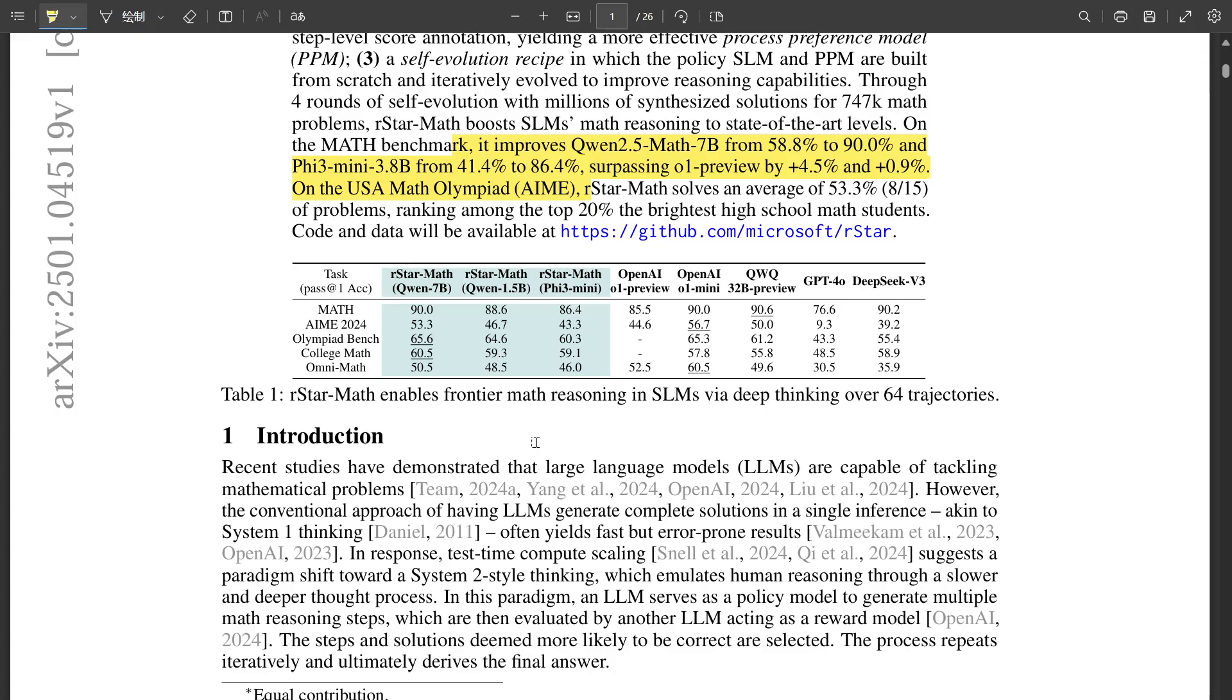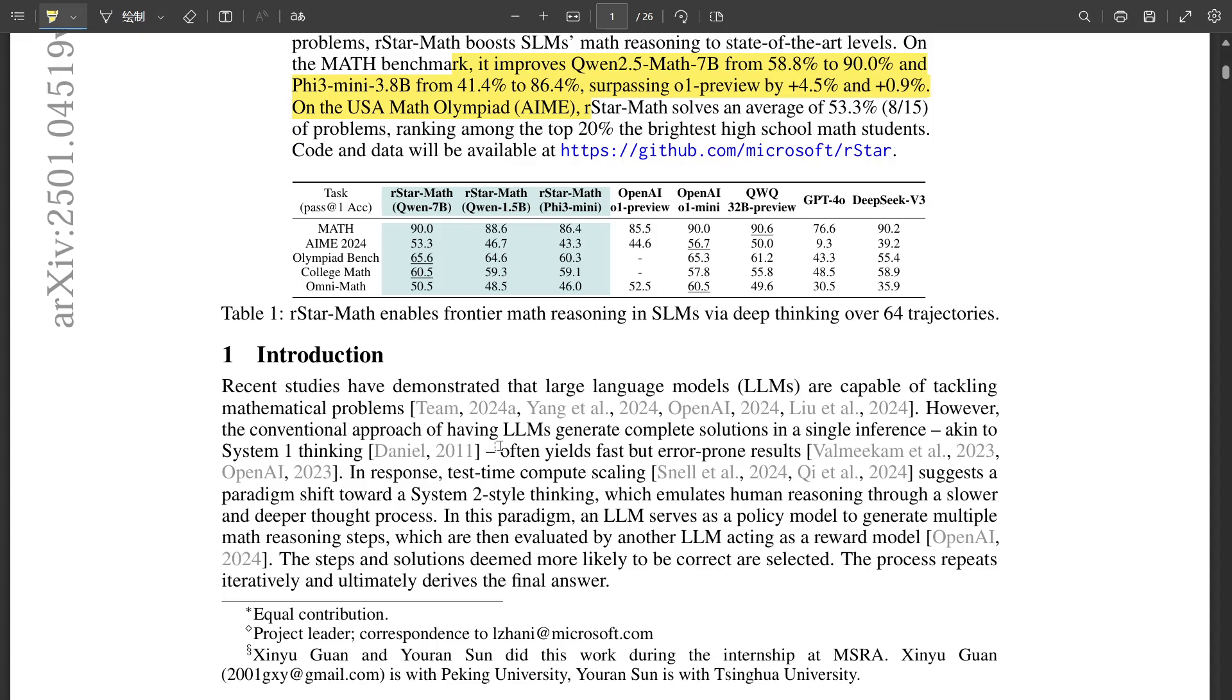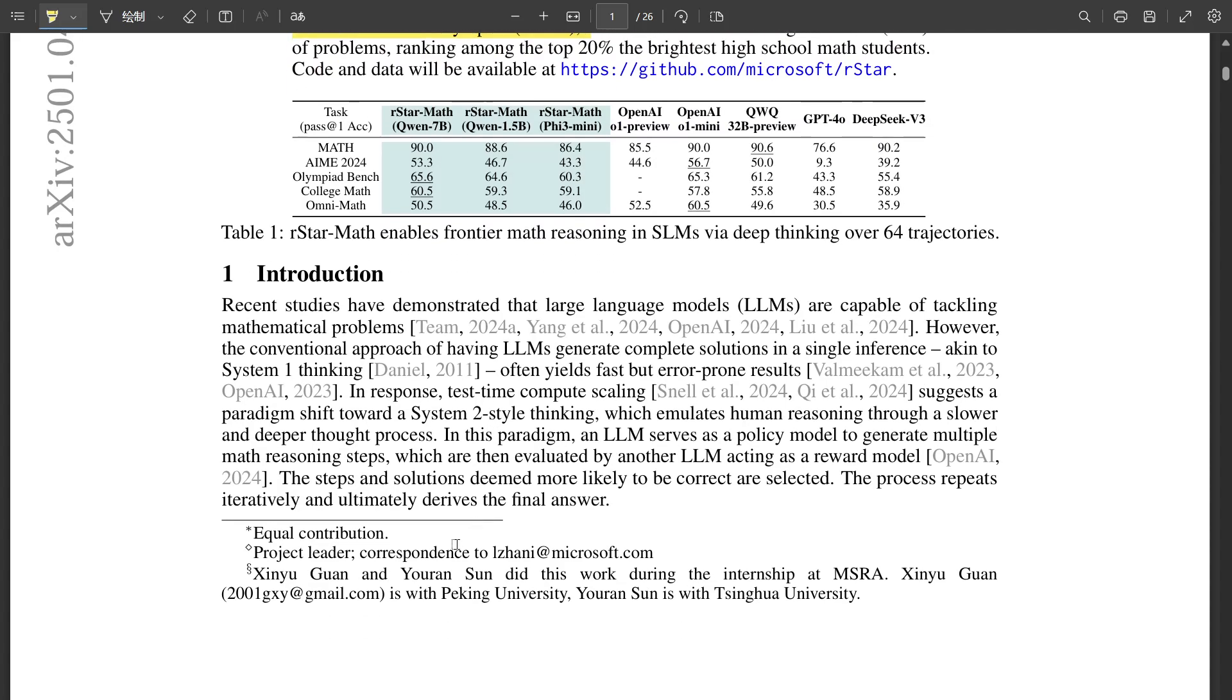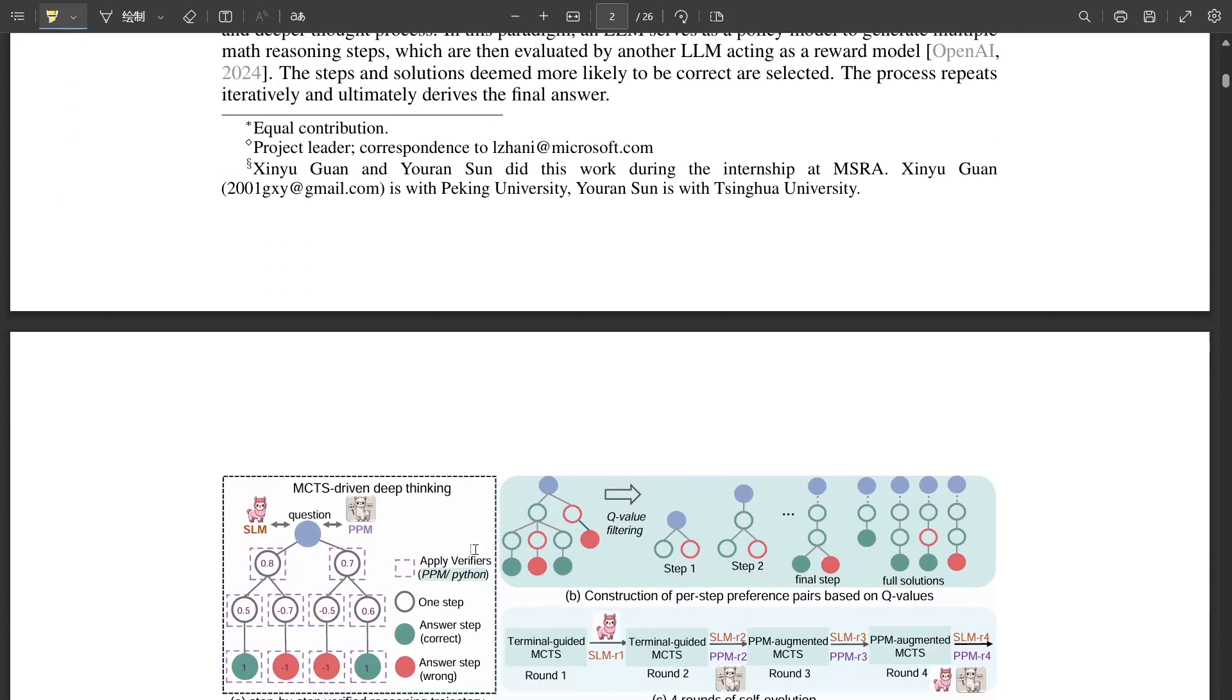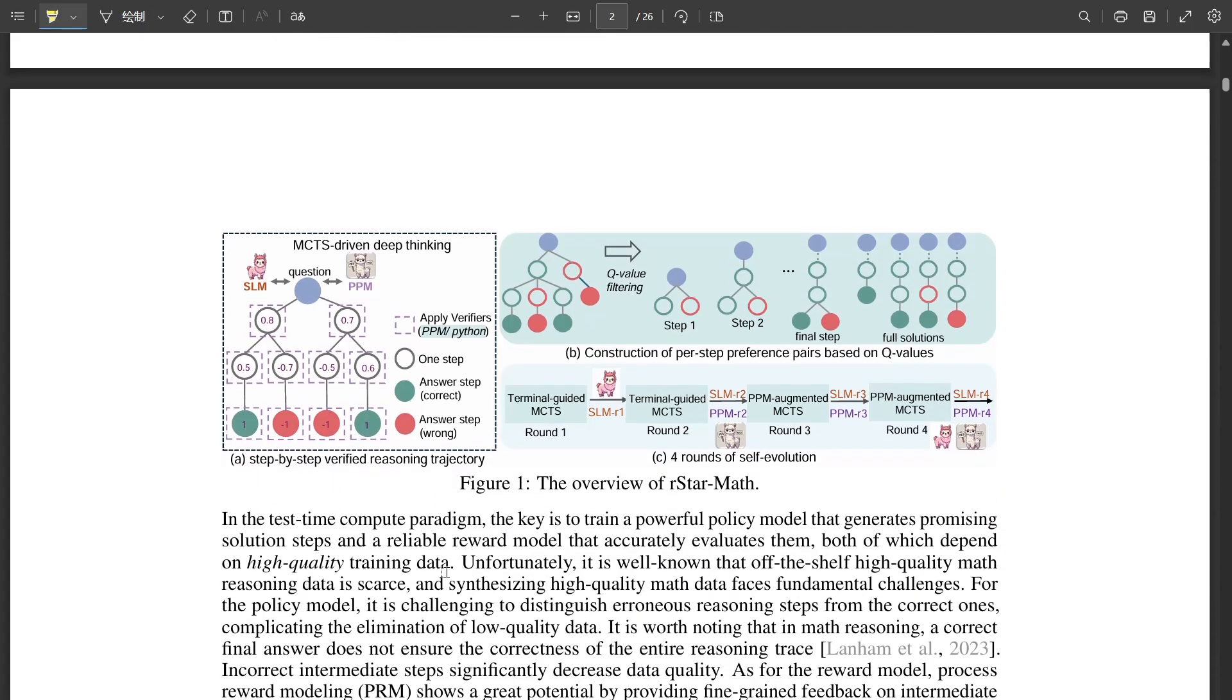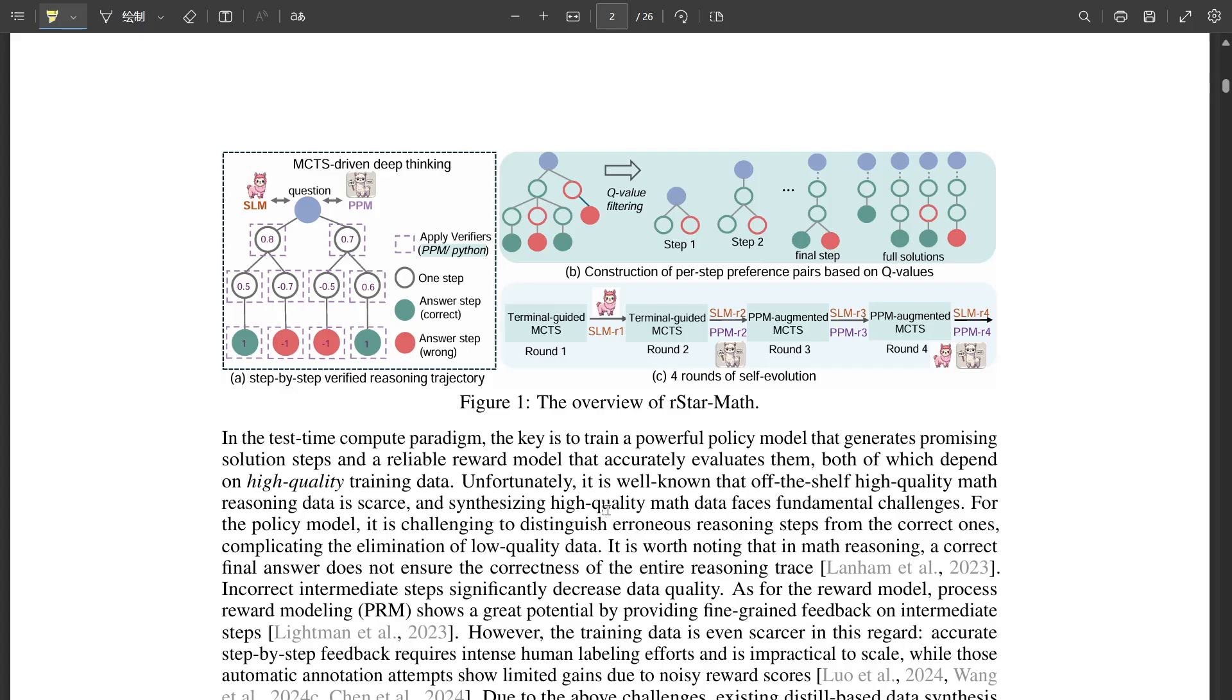That's a great analogy. And to make this game even more effective, R-Star Math introduces this really clever code-augmented approach. Does that mean the AI is writing code to solve the math problems? It is. But it's not just writing code. It's writing out the solution steps in words, just like a human would, and then generating that equivalent Python code for those steps. And the brilliant part is that if the code doesn't run successfully, the AI knows it's hit a dead end. So it's double-checking its work in real time, using code execution as a feedback mechanism.